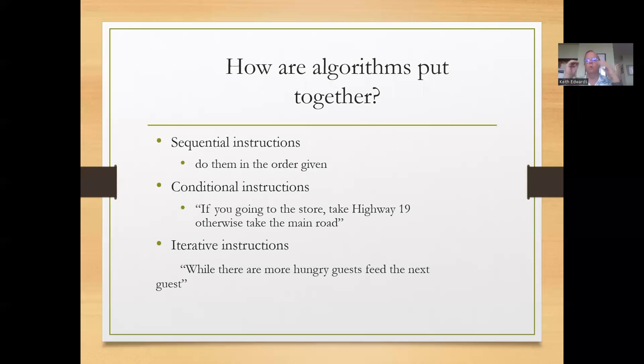So how do we put algorithms together? Well, we have three types of general instructions. One are sequential instructions that we do in order. Get out of bed, put on a clean set of clothes, brush your hair, and go down and get your car keys and head out the door.